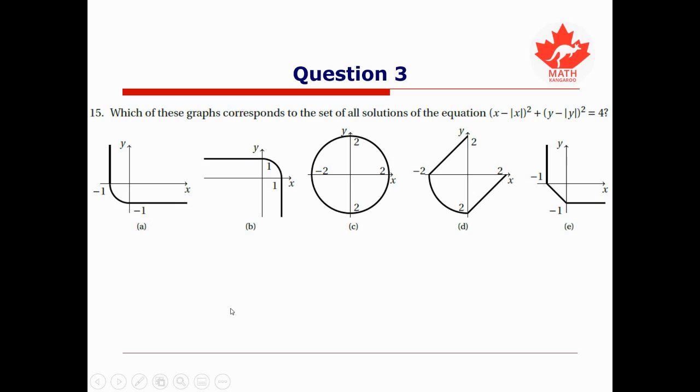For the final question, we're shown these five graphs and asked to determine which one corresponds to the set of solutions for the equation (x - |x|)² + (y - |y|)² = 4. As always, the way to get the most out of this video is to pause it right now and give this problem a try on your own before looking at my solution.